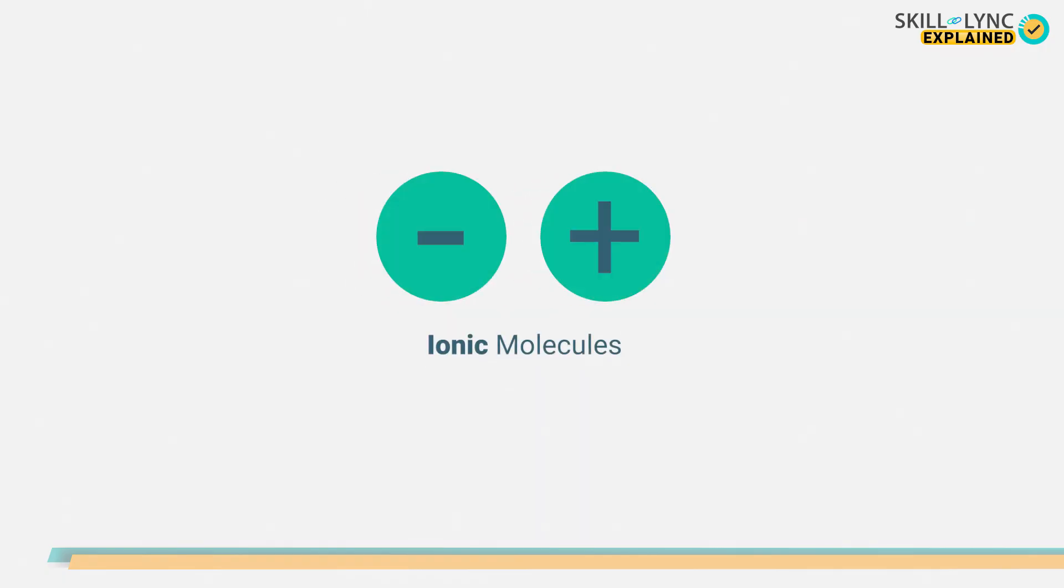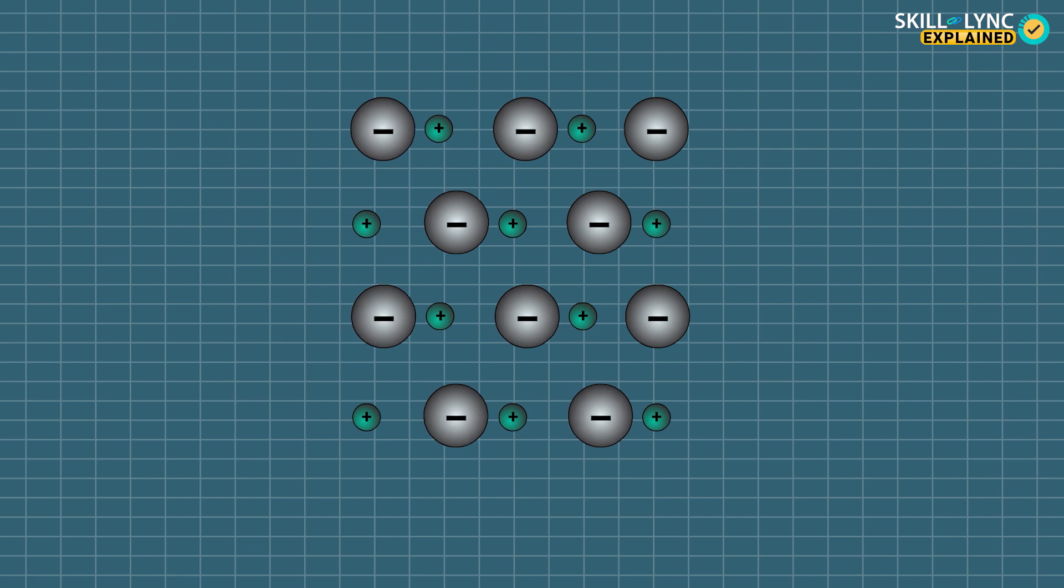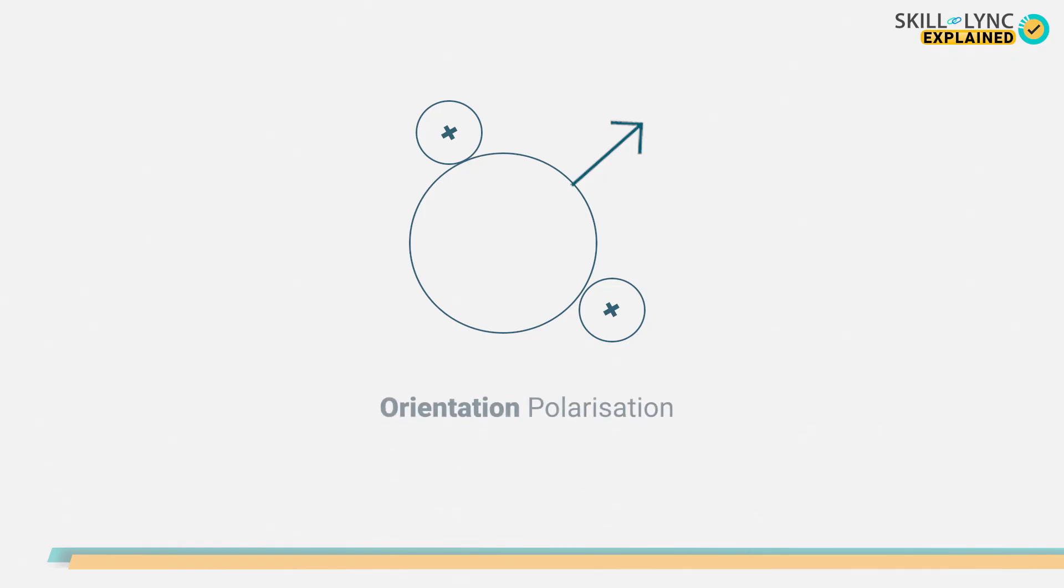Ionic polarization is found in ionic molecules. When a field is applied, the cations move in one direction whereas the anions move in another direction. The third type of polarization is the orientation polarization.